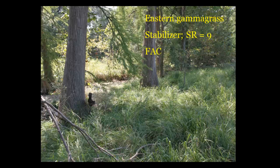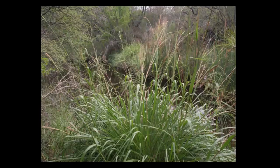Another stabilizer you have in this area is called eastern gamma grass. Notice the very high stability rating — it's also a facultative plant, so it can withstand some dry weather. It doesn't have to be sub-irrigated or have a high water table all the time. One great thing about eastern gamma grass is that it grows very well in the shade — most grasses want to be in the sun, but gamma grass will do quite well under moderate shade. These plants are three to five feet across and over six feet tall — big, strong plants.